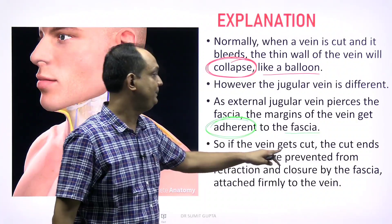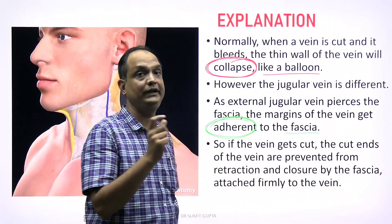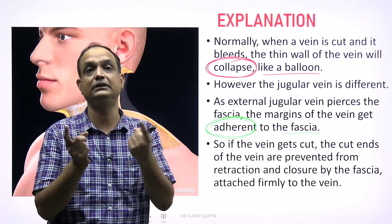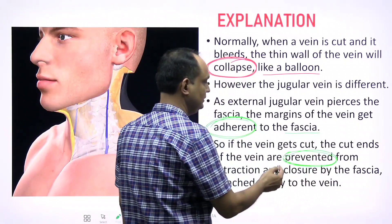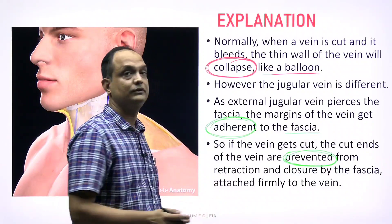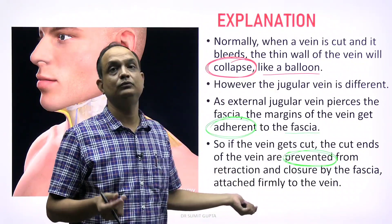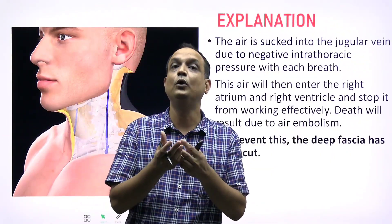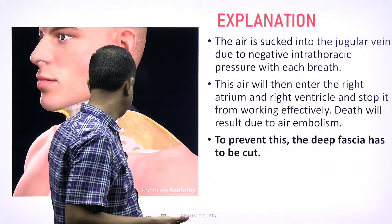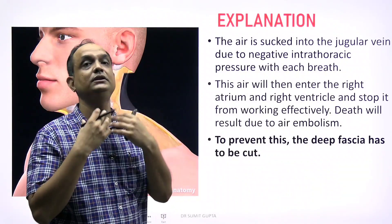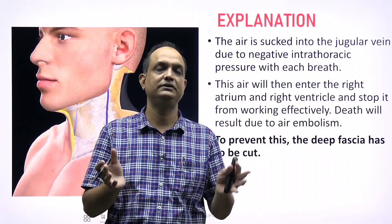Because the margin of the vein is adherent to the deep fascia, this adherence prevents the collapse that should normally occur. If the vein is cut, the cut ends are prevented from retraction. The fixation of the venous wall to the surrounding fascia prevents collapse, closure is not possible, and the lumen of the vein remains open — so air is sucked inside.